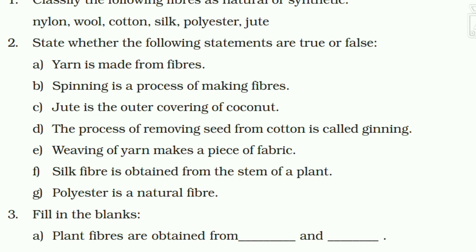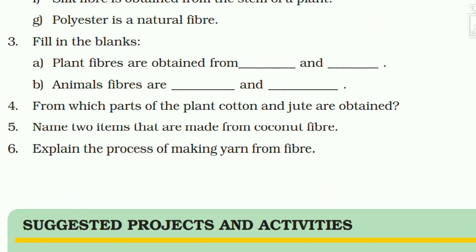Coir means coconut fiber. 'The process of removing seeds from cotton is called ginning' — this is true. 'The weaving of yarn makes a piece of fabric' — this is true; thread woven together forms fabric. 'Silk fiber is obtained from the stem of a plant' — this is false; silk fiber is obtained from silk worms, not from the stem of a plant.